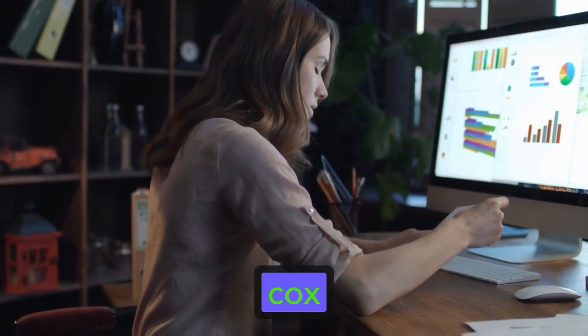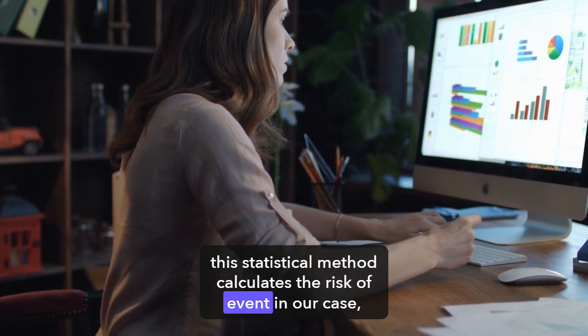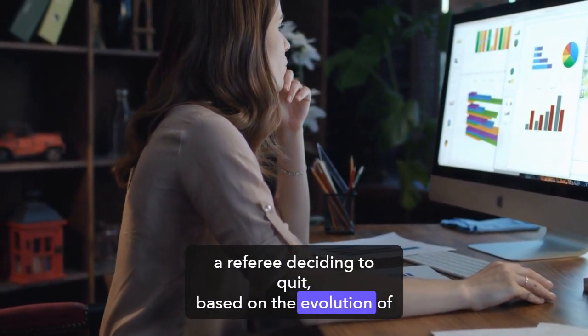Our primary tool, the Cox Regression Survival Analysis. This statistical method calculates the risk of an event, in our case, a referee deciding to quit, based on the evolution of different variables.